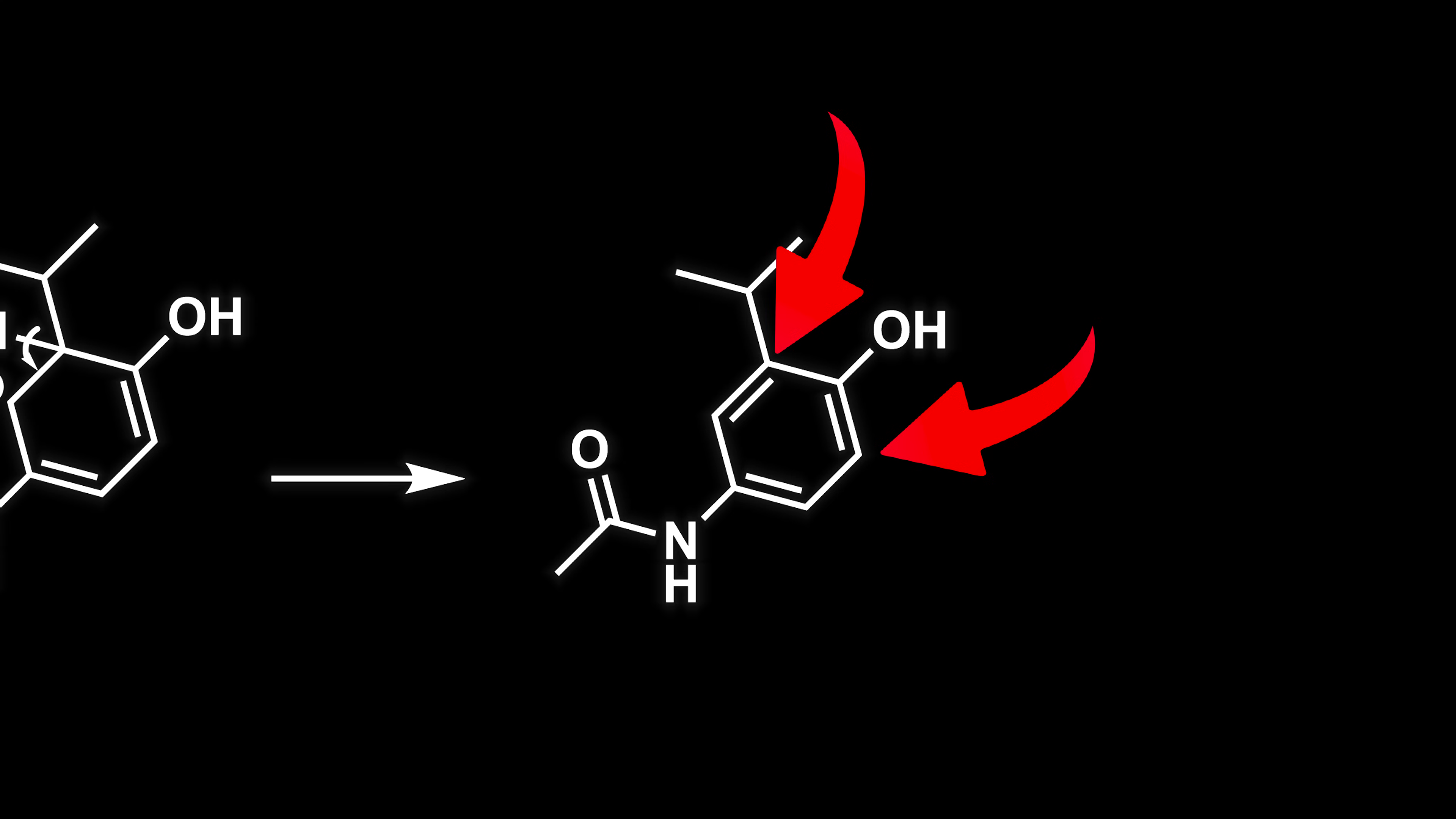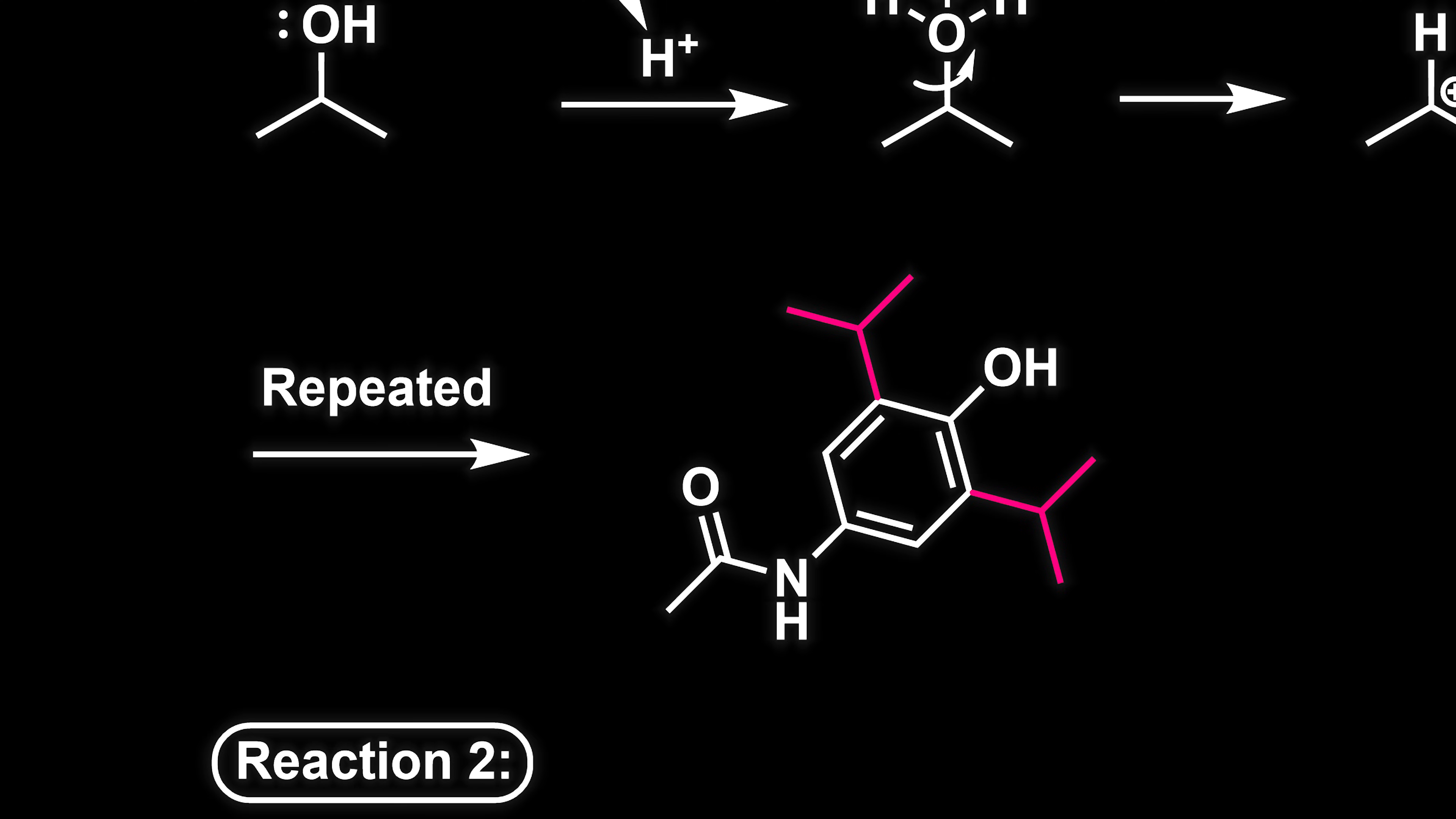You might be confused as to why the isopropyl group goes right there and not anywhere else. Starting from this hydroxyl group, if we go one carbon over this is the ortho position, two carbons over is the meta position, and three carbons over is the para position. This is important as we need both isopropyl groups to be ortho to the hydroxyl group. Starting with acetaminophen we already have this N-acetyl group which can serve as a blocking position. This hydroxyl group is an activating group. When we add an electrophile it will go either ortho or para to the hydroxyl group. Since the N-acetyl group is already blocking the para position, both isopropyl groups will go to the ortho position.